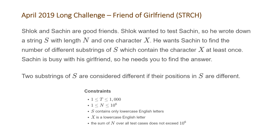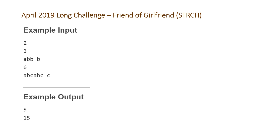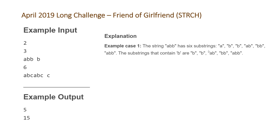Before we get to the solution, let's take a look at the examples. We're given two test cases. The first has n equal to 3, string 'abb', and the character we're looking for is 'b'. The output is 5. The explanation is that the string 'abb' has six substrings in total — 'a', 'b', 'b', 'ab', 'bb', and 'abb' — and only five of those contain the character 'b'. The single 'a' doesn't contain a 'b', so we get 6 minus 1 equals 5.